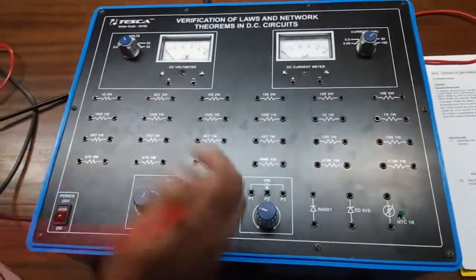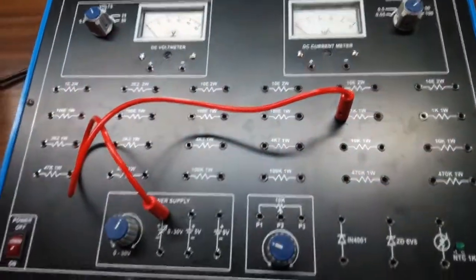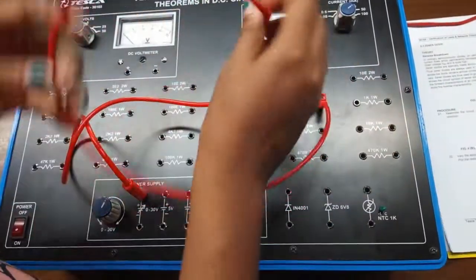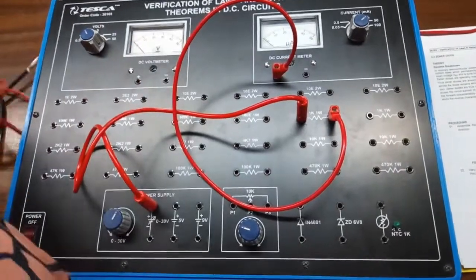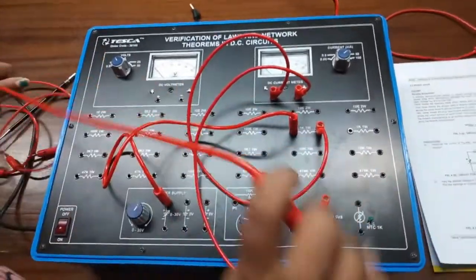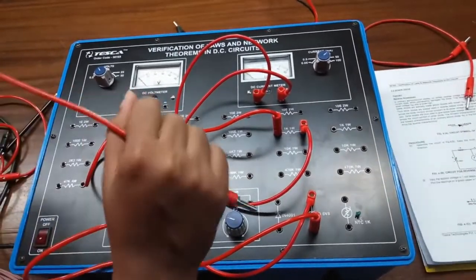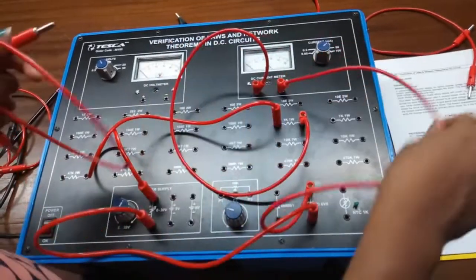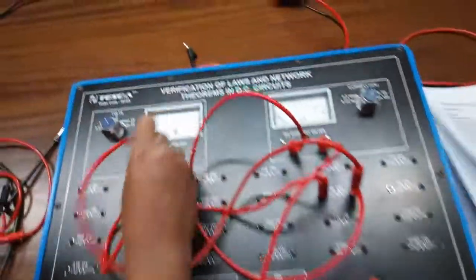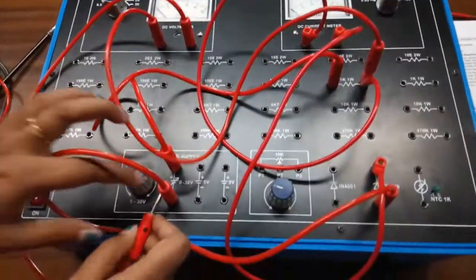First connect the variable power supply to a 1K resistor, then connect to the positive terminal of the current meter. Connect the negative terminal of the current meter to the cathode of the Zener diode, and connect the anode of the Zener diode to the negative terminal of the power supply. Connect the positive terminal of the voltmeter from the 1K resistor and the negative terminal of the voltmeter to the negative terminal of the variable power supply.